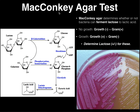What is MacConkey agar? It is both a selective and differential medium. It's selective in the sense that it selects for the growth of gram-negative organisms. So if you have growth on either side of this MacConkey agar plate right here, anytime you have growth on MacConkey agar, that's going to indicate that you have a gram-negative organism.